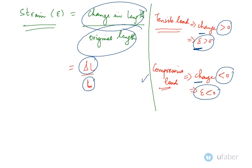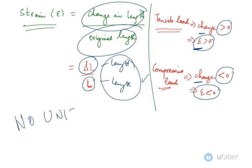Now this is a length and this is also a length. So length by length means the strain will have no units. There are no units for strain because it is just a ratio of two lengths.